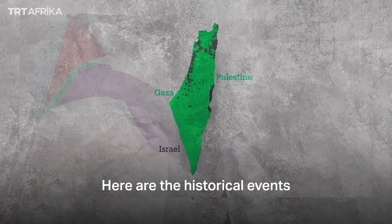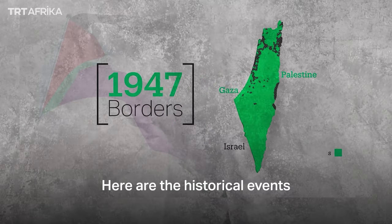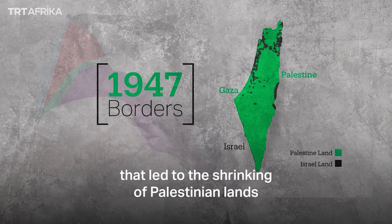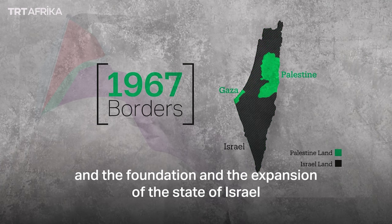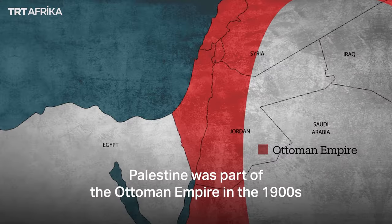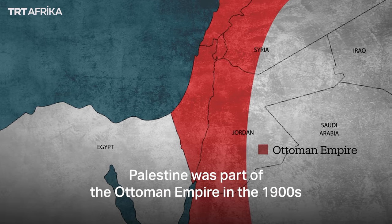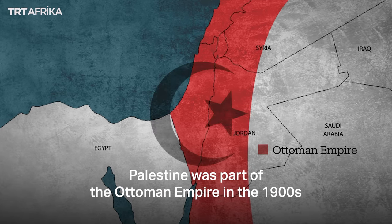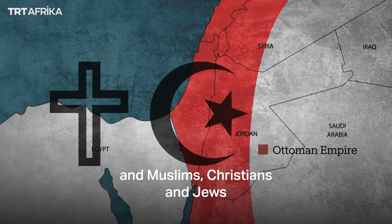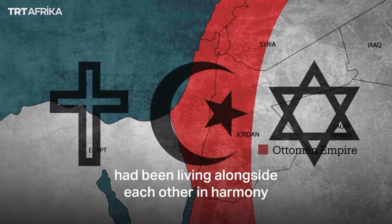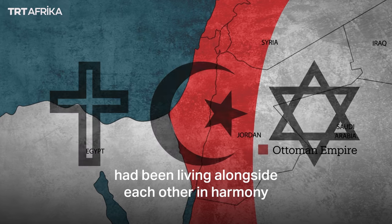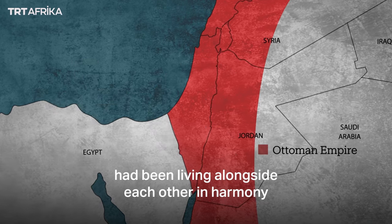Here are the historical events that led to the shrinking of Palestinian lands and the foundation and expansion of the State of Israel. Palestine was part of the Ottoman Empire in the 1900s, and Muslims, Christians, and Jews had been living alongside each other in harmony.